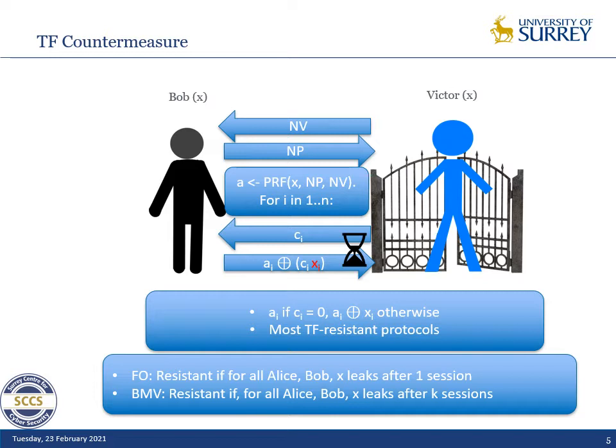If Bob gives his key to Alice, she can authenticate and we can't do anything. So we make the assumption that Bob wants to protect his authentication right and not permit Alice to authenticate on his behalf later.